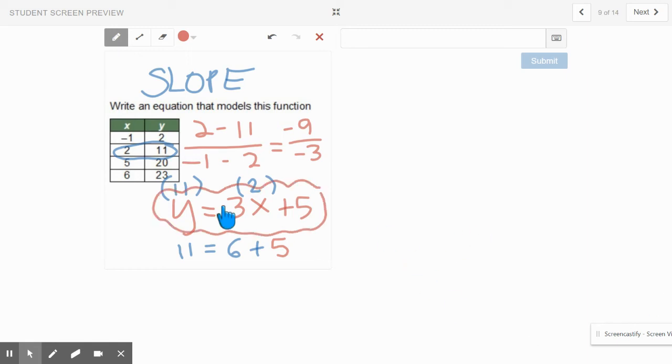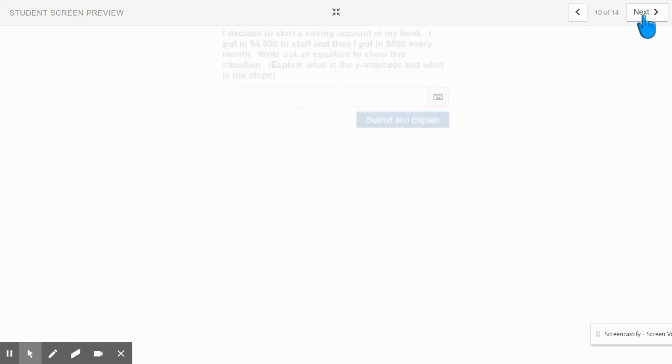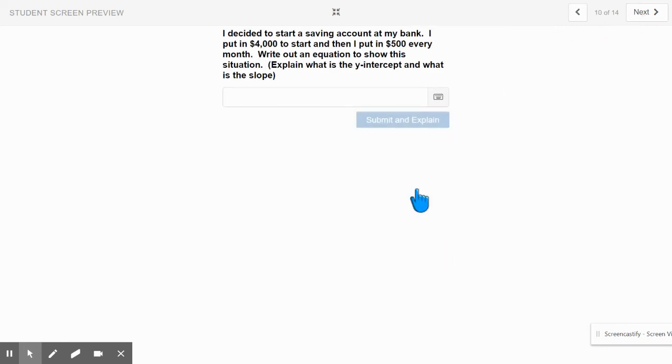All right. You got to be able to get there. You got to be able to get there with this one. Good question. I decided to start a savings account at my bank. I put in $4,000 to start. And then I put in $500 every month. Write an equation to show the situation. So there's a starting point of $4,000. And then there's $500 every month. What you start your bank account with? Let's see if you can write your equation out. It should be Y equals, remember, something X, and I'll even give you a hint. It's plus something. Okay.